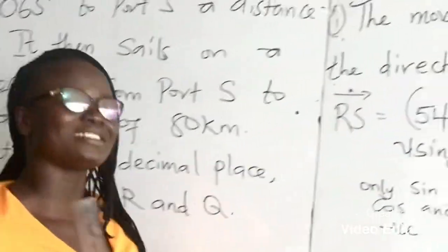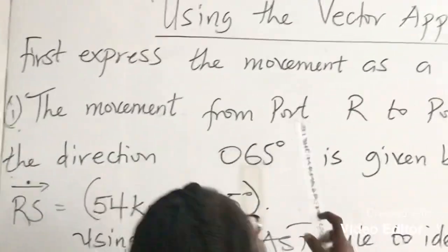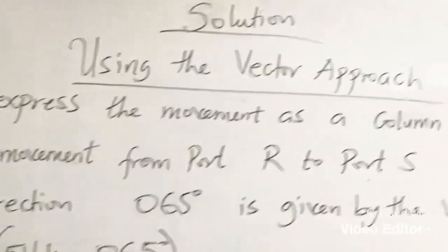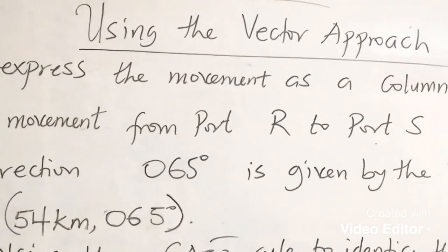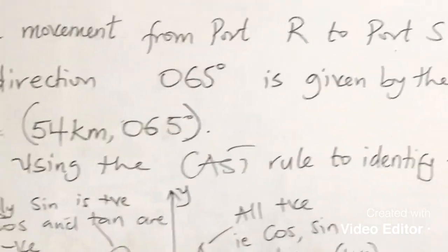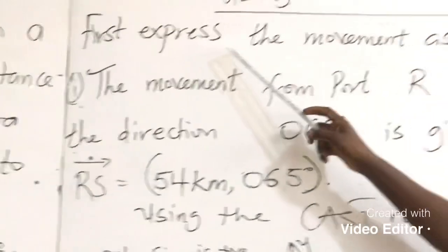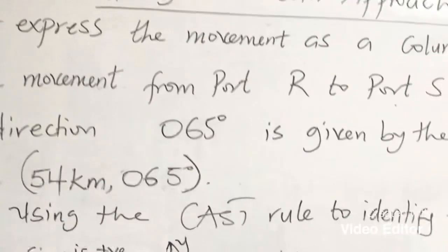So I am going to go through the steps with you. We use the vector approach in solving this question. You can use the graphical approach as well, but let's use the vector approach. So the first is express the movement as a column vector.